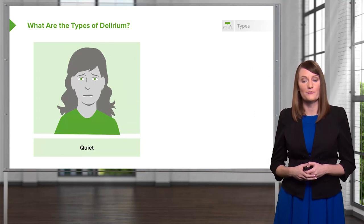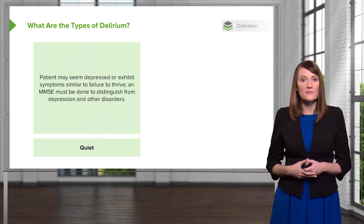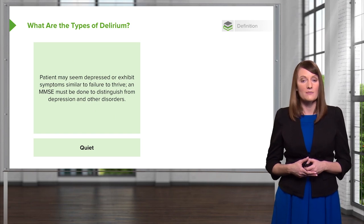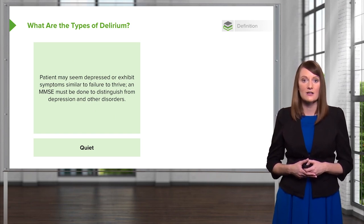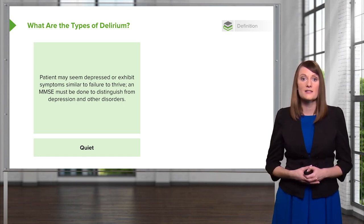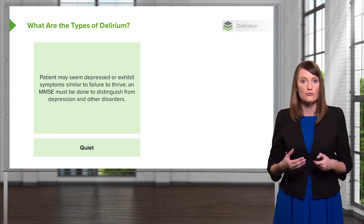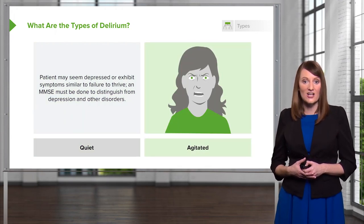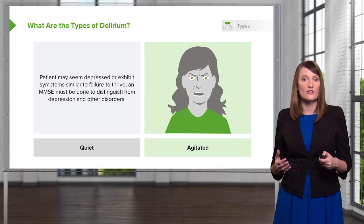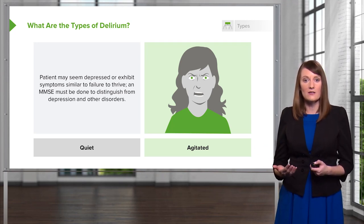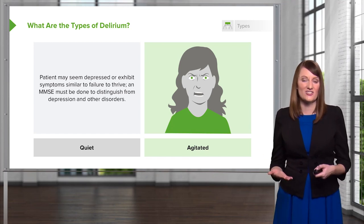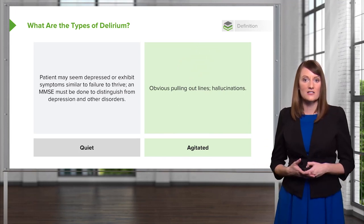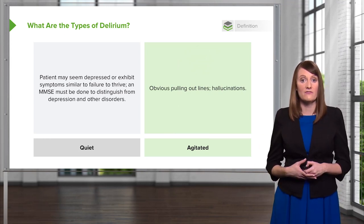There are two different types of delirium you should know about. Delirium can be quiet, meaning the patient might seem depressed or exhibit symptoms similar to failure to thrive — not getting out of bed, not eating, not taking care of themselves. You must perform a mini-mental status exam to distinguish between depression and other disorders of cognition. The other type is the agitated delirious patient, most commonly seen in clinical wards — someone writhing around in bed, pulling out IV lines or feeding tubes, actively hallucinating, and seeming very agitated.